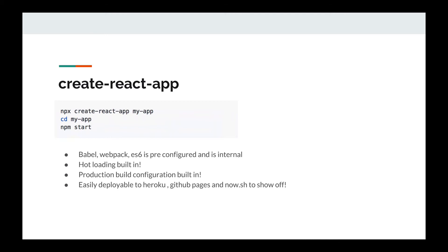It's also ready to be deployed to Heroku, GitHub Pages, and Node.sh. If at some point you feel that you want configuration more powerful than what Create React App provides, you can always eject out of Create React App, and all the Babel, Webpack, and ES6 configurations are made available to you so you can start tweaking the Babel or Webpack config files and make the app even better.